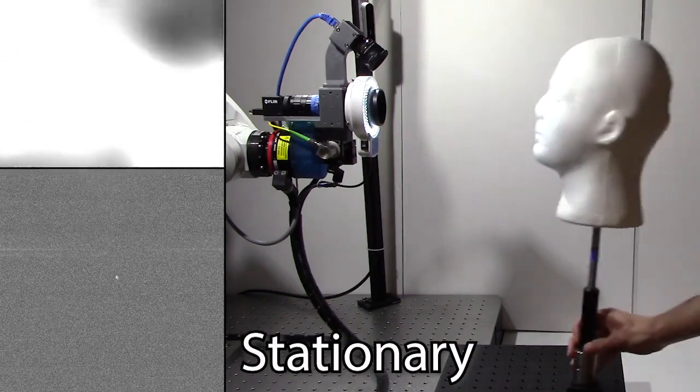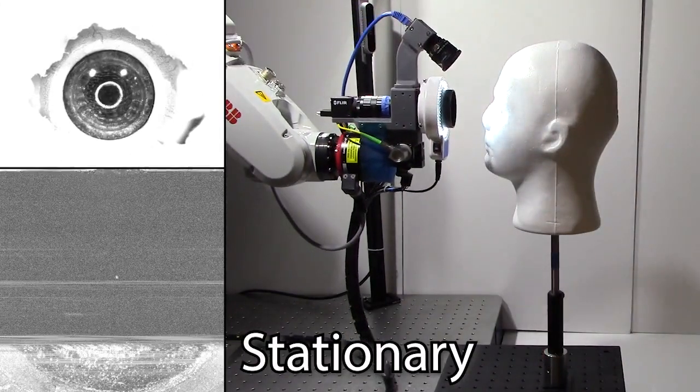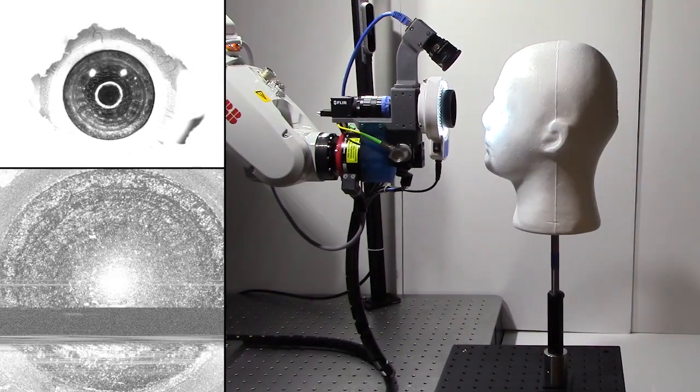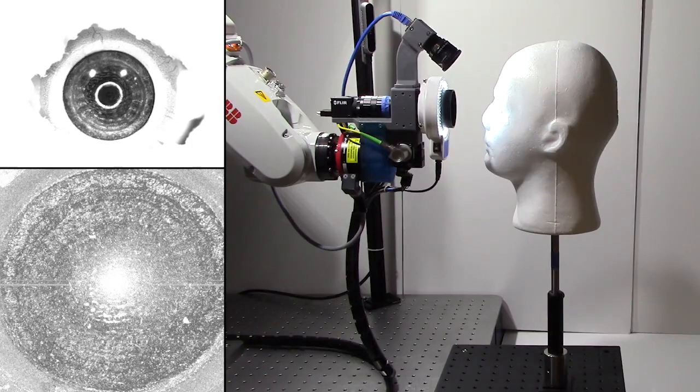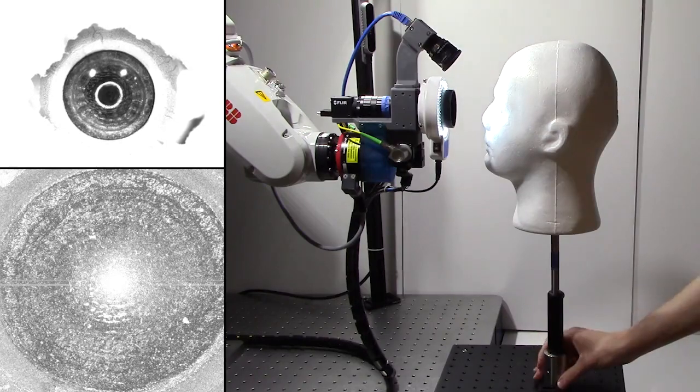We start by showing alignment with stationary targets. Using the eye and pupil tracking cameras, the robot obtains a high-quality OCT volume of the eye within seconds.